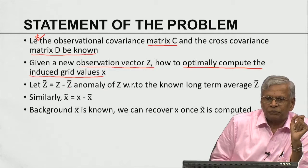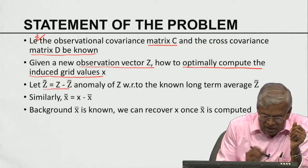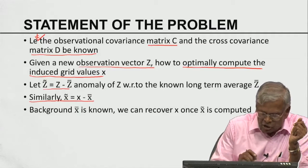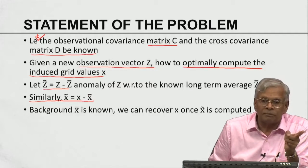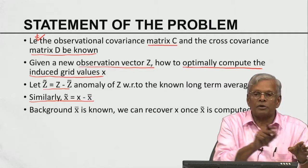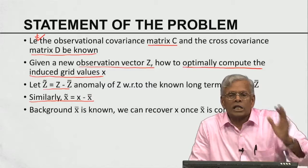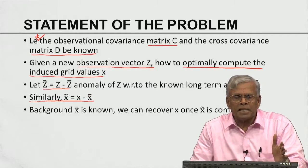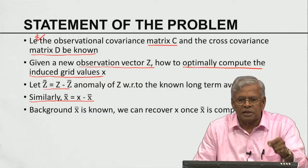Z-bar is the long-term average of Z. Because of stationarity, Z-bar is invariant in time. Z-tilde equals Z minus Z-bar — the anomaly of Z with respect to the long-term average. Similarly, let X-tilde be X minus X-bar. I know X-bar because I have computed D with it. I do not know X — that is the one I want to determine. Computing X is equivalent to computing X-tilde, because if I know X-tilde I can add it to X-bar to get X. So I am going to work with anomalies: Z-tilde is the observation anomaly on a new day, X-tilde is the corresponding induced anomaly in the grid. My job is to optimally determine X-tilde from Z-tilde, knowing C and D.